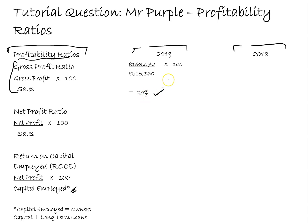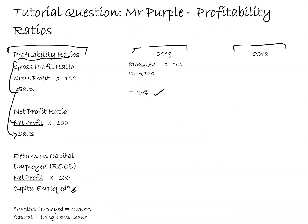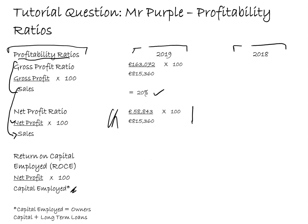The gross profit figure 163,072 divided by the sales multiplied by 100 gives a gross profit ratio of 20%. For the net profit ratio, the sales figure is already used, so I just need the net profit figure from the income statement. That gives us net profit 58,843 divided by sales multiplied by 100. All profitability ratios are expressed as percentages - that gives us 7.22%.